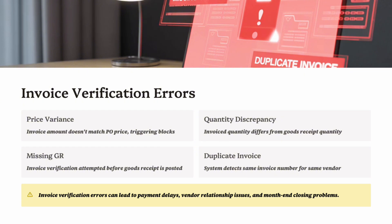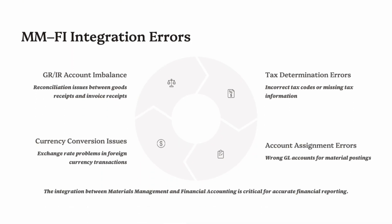Missing GR — if the invoice arrives before the goods receipt is posted, SAP cannot perform the three-way match and blocks the invoice. Duplicate Invoices — vendors sometimes resend the same invoice; SAP detects duplicates based on invoice reference number, but only if master data is clean. To fix these: use Tolerance Keys to allow small differences, always ensure GR is posted before MIRO, monitor blocked invoices using MRBR, and cancel incorrect invoices with MR8M and repost correctly. Mastering these errors keeps the procure-to-pay cycle smooth and avoids payment delays.